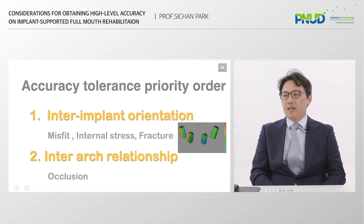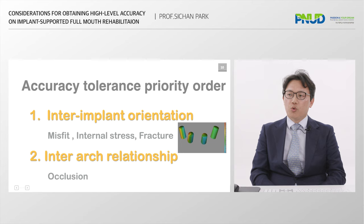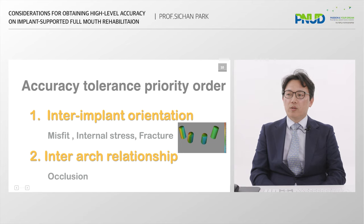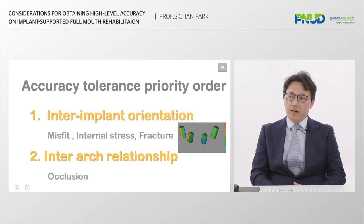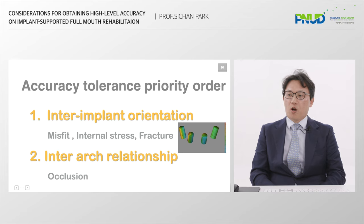Minimizing misfit and internal stress is a key factor. We can also capture the jaw relationship — this is the so-called bite. If proper bite-taking fails, please try provisional restoration and correct it. In full mouth cases, cross mounting and cross denture wash impression are very useful.